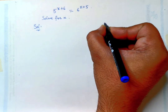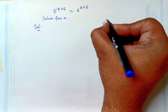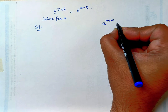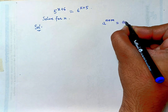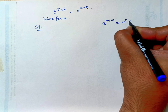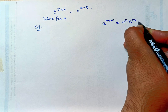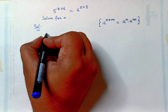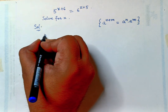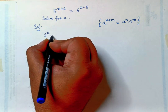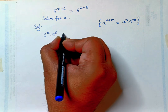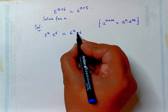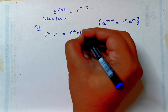We have a formula: a raised to power n plus m is equal to a raised to power n into a raised to power m. So we can write it as 5 raised to power x into 5 raised to power 6 is equal to 6 raised to power x into 6 raised to power 5.